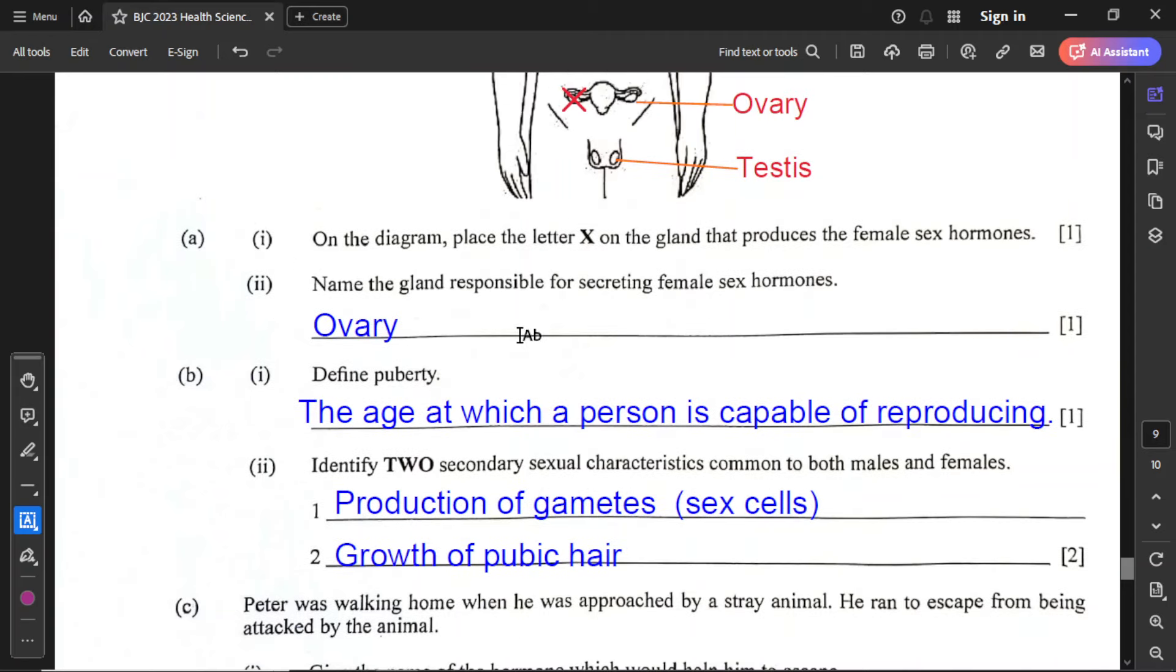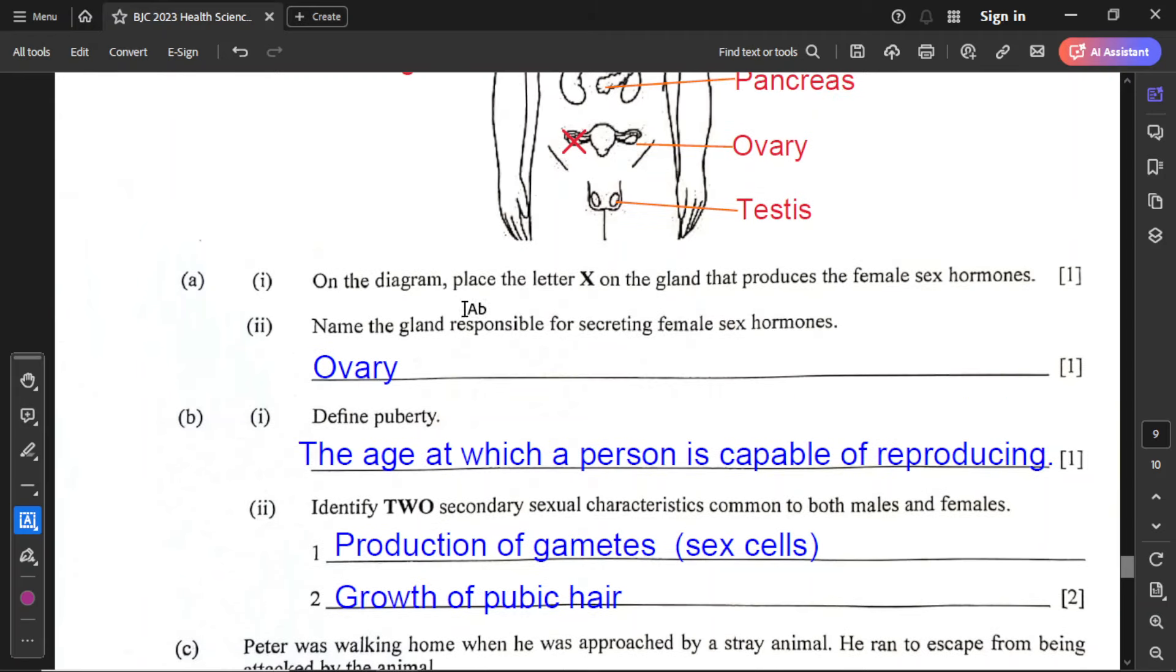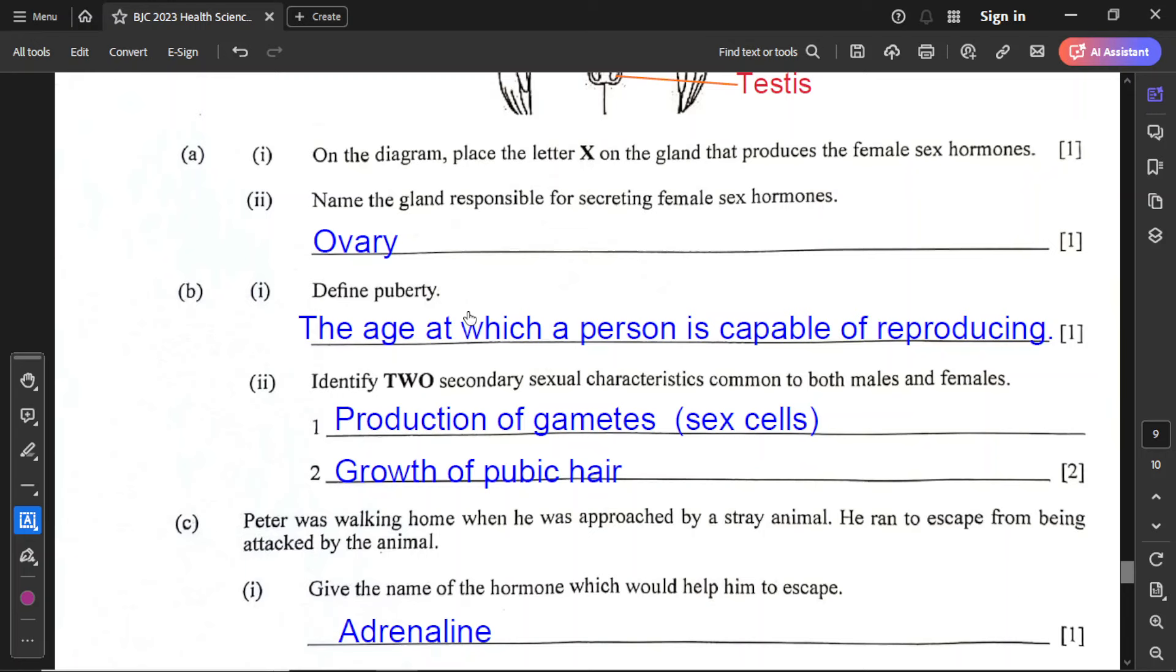Part A2: name the gland responsible for secreting female sex hormones. That is the ovary. For part B1, define puberty. Puberty is the age at which a person is capable of reproducing or producing gametes. For part B2, identify two secondary sexual characteristics common to both males and females. That would be the production of gametes, otherwise called sex cells, and growth of pubic hair. Both males and females experience these two things at puberty.